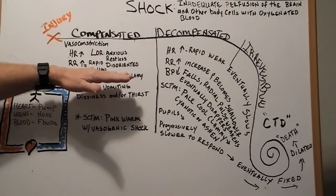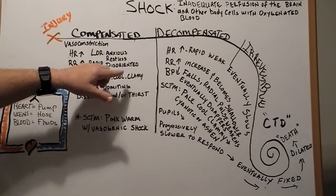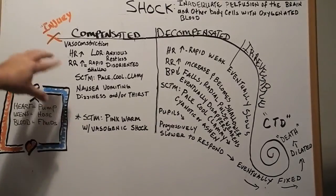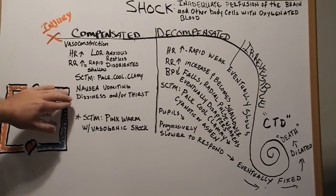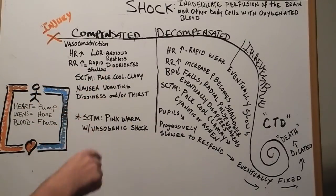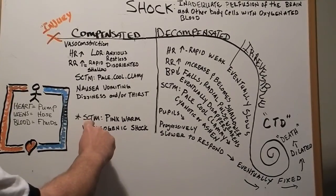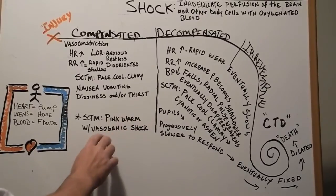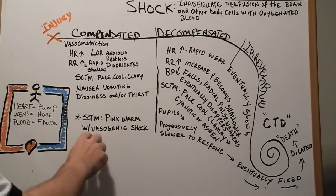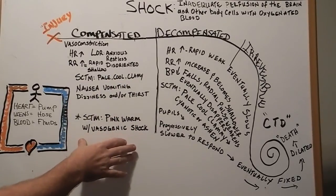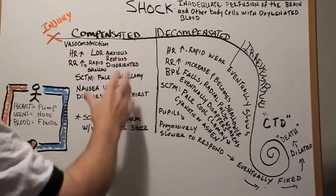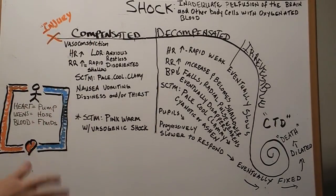This is typical shock. If you see your patient and they are pale, cool, and clammy, you know that they are in shock. They might have nausea, vomiting, some dizziness, or thirst. Something else to keep in mind: if their skin color, temperature, moisture is pink and warm instead of pale and cool, this could be a sign that they're in vasogenic shock — so we're uncompensated right now. The heart and respiratory system are working. Then we start to move into the decompensated stage.